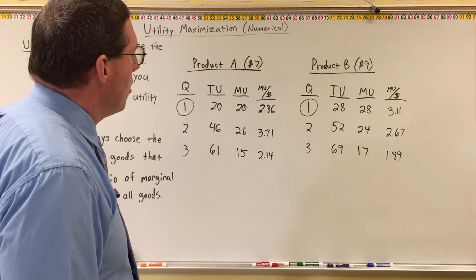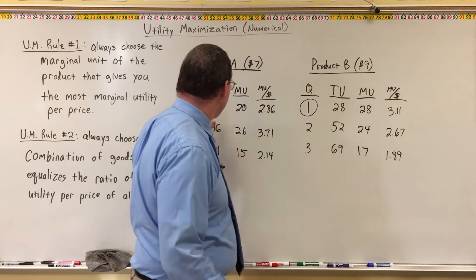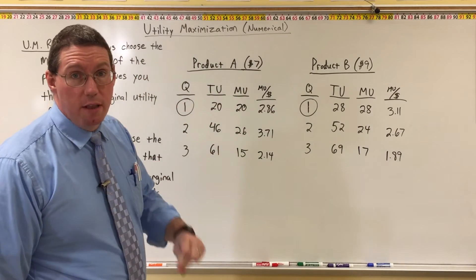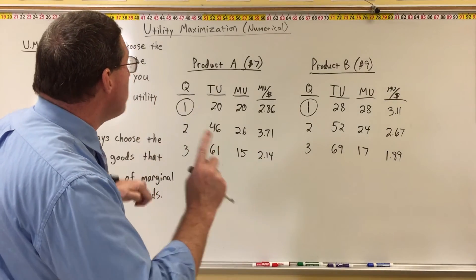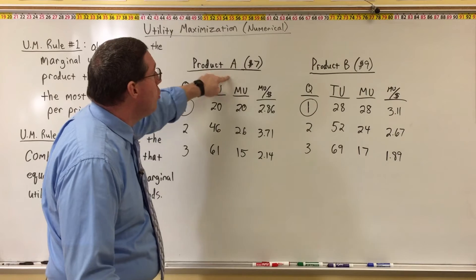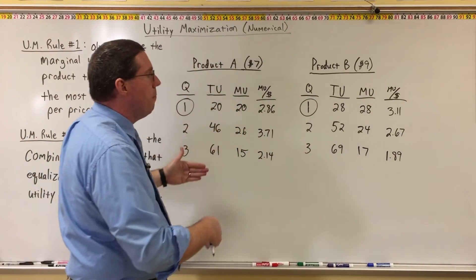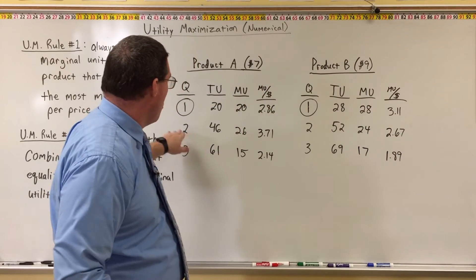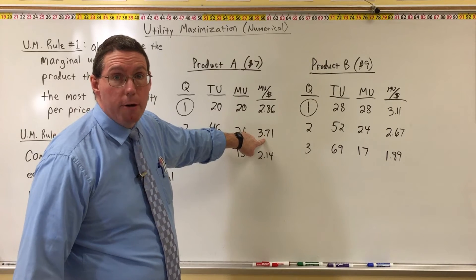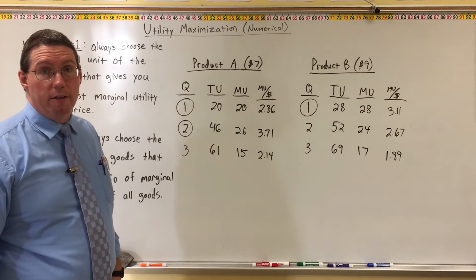Now let's say you have $25. After buying the first unit of B and the first unit of A, you have $9 left and can choose one more unit. Now the marginal unit of A is the second unit, and the marginal unit of B is also the second unit. Comparing marginal utility per price: product A's second unit gives 3.71 per dollar versus product B's second unit at 2.67 per dollar. Since 3.71 is greater, we choose a second unit of product A. With around $25–$26, the best combination is two units of product A and one unit of product B.